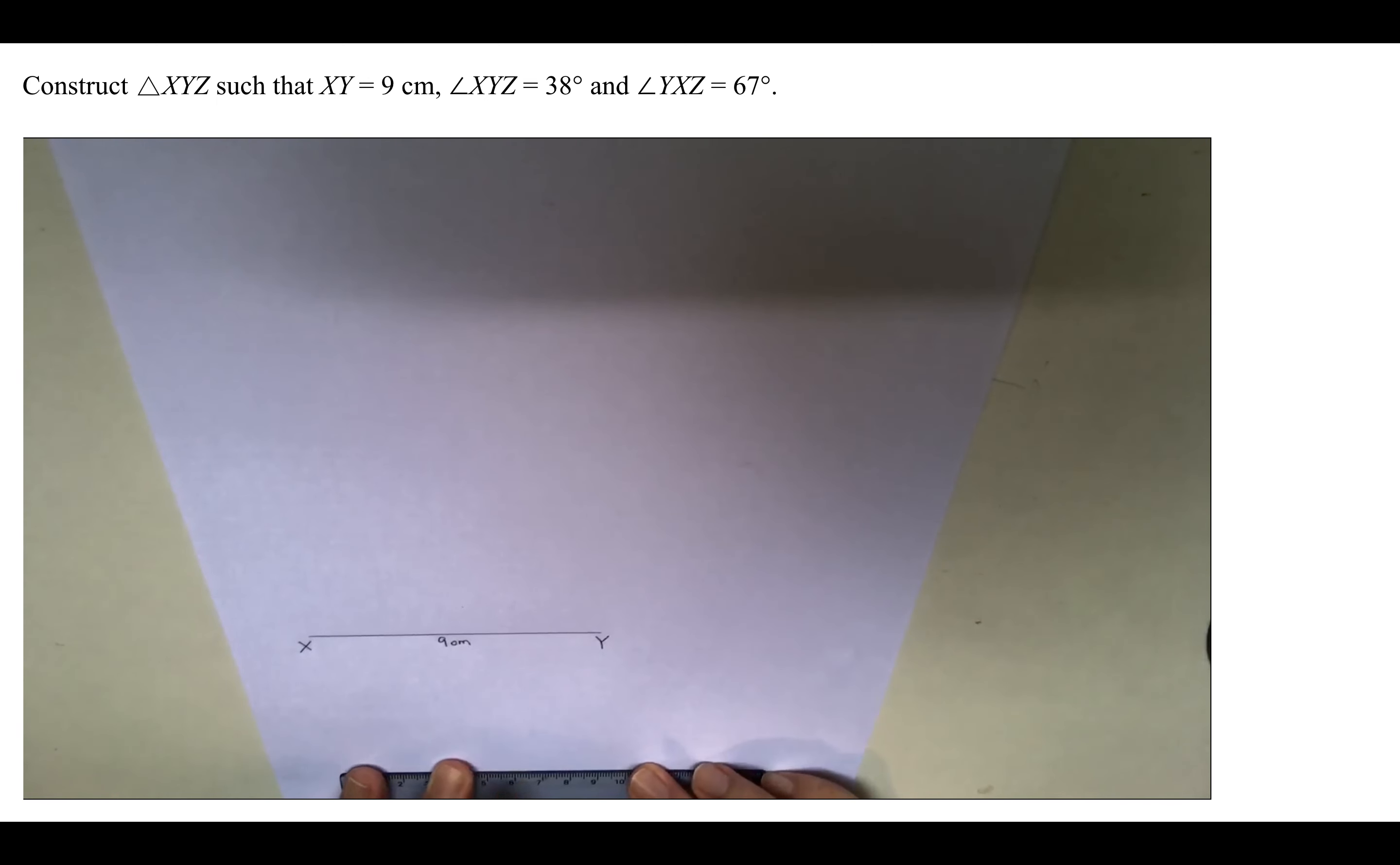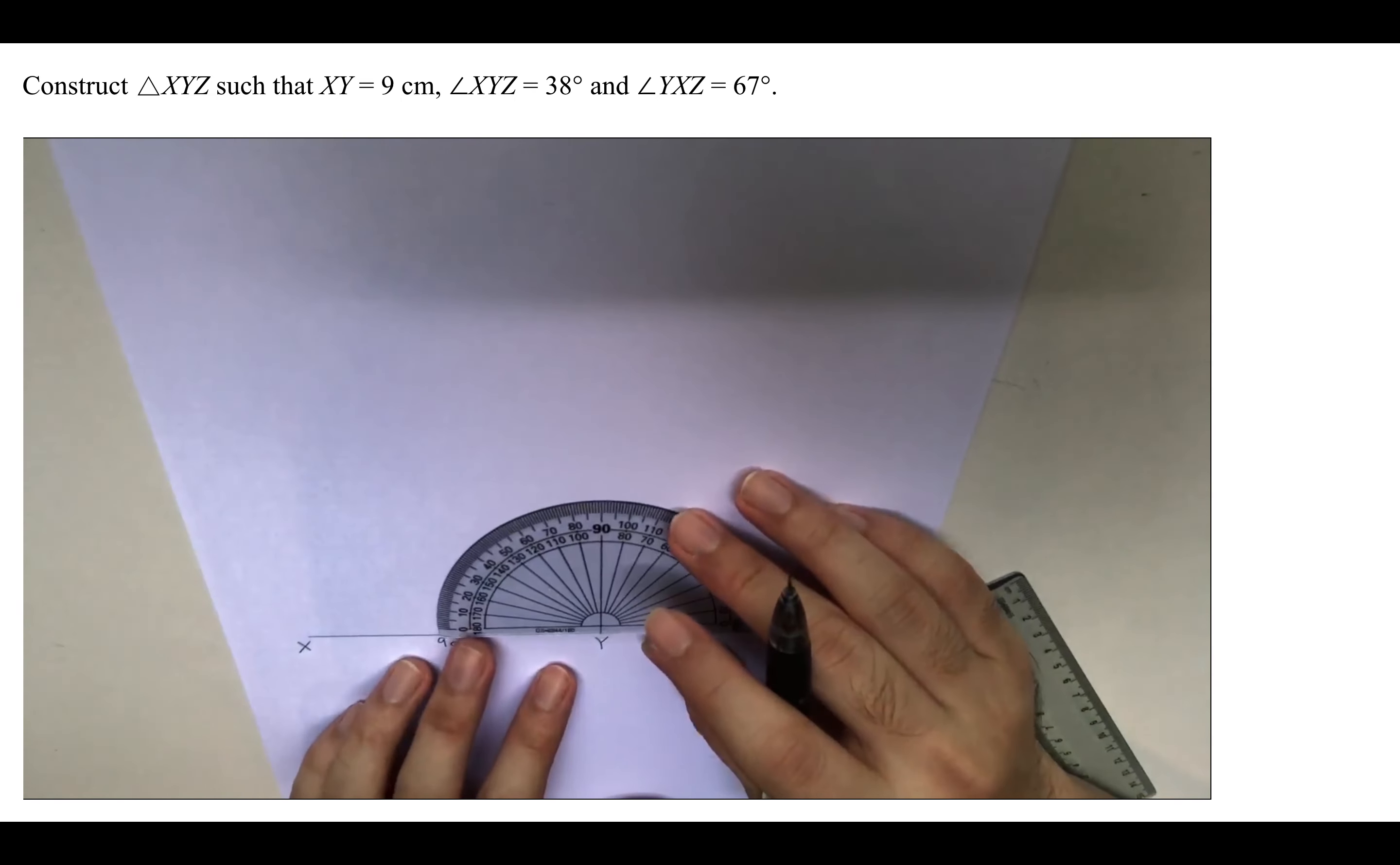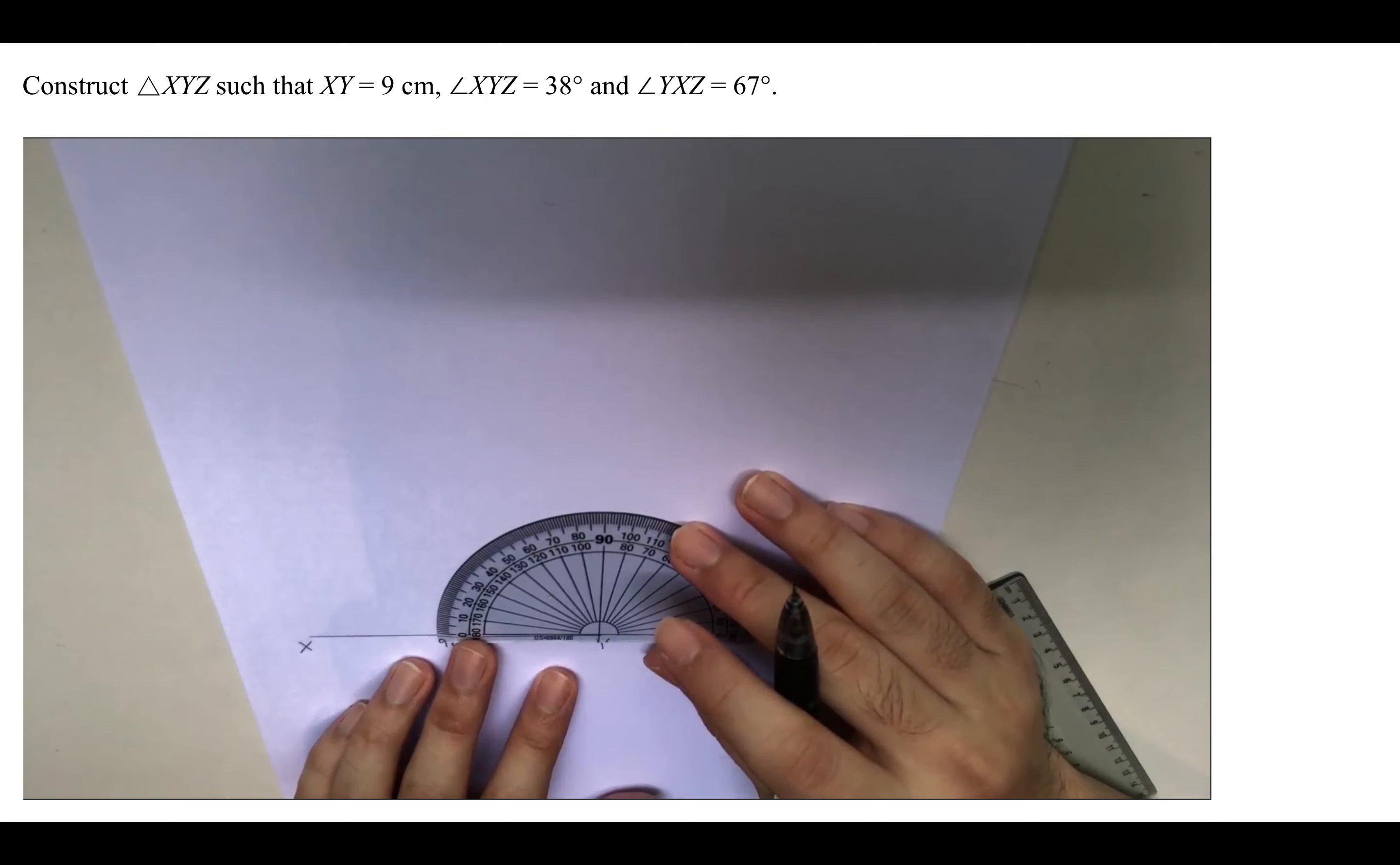Now the next piece of information that we have is that angle XYZ is 38 degrees. So we are going to use the protractor. XYZ is over here at point Y, and we are going to measure 38 degrees over here.